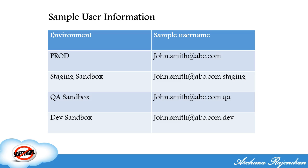Production is accessed via HTTPS login.salesforce.com. But for staging, QA, and dev sandboxes, all sandboxes are accessed via HTTPS test.salesforce.com. How do you differentiate whether you want to log into QA, dev, or staging sandbox? It all differs by the username. For example, John Smith's production username would be johnsmith@abc.com. When he goes to test.salesforce.com and enters johnsmith@abc.com.qa with his password, it automatically takes him to the QA sandbox — Salesforce recognizes it by the username and launches the correct sandbox.